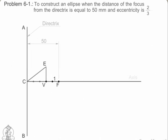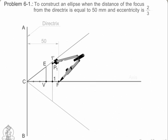Mark any point 1 on the axis and through it draw a perpendicular to meet CE produced at 1 dash. With centre F and radius equal to 1-1 dash, draw arcs to intersect the perpendicular through 1 at points P1 and P dash 1.